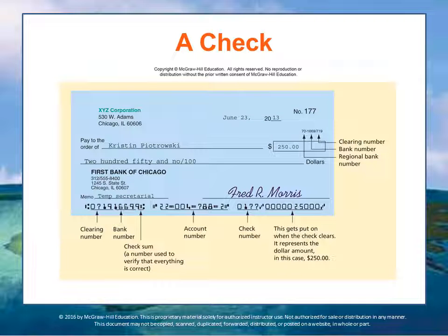This slide shows a check, explaining the significance of the various numbers found on a typical U.S. check. As legal instruments, they serve as substitutes for currency and coins and are preferred for many transactions due to the lower risk of loss. You can lose your cash, but if you lose a check, as long as it's not signed and endorsed, you're fine — so it's considered to be safer. This describes the various numbers on a check and what all this information means.